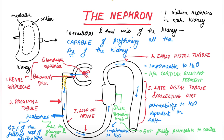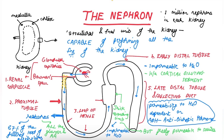So this is about the nephron: 1 million nephrons in each kidney, with five parts — the renal corpuscle, proximal tubule, loop of Henle, early distal tubule, late distal tubule, and collecting duct. The nephron is the structural and functional unit of the kidney, capable of performing all the functions of the kidney. Thank you, I am Dr. Swapnil — please subscribe to my channel and have a good day.